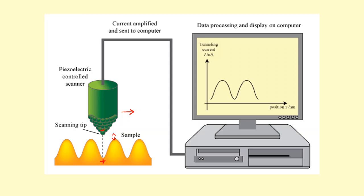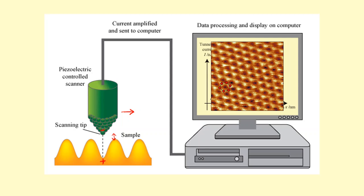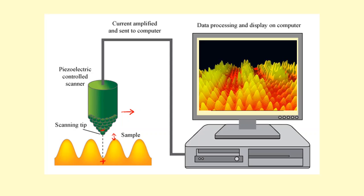The tip doesn't just move left and right, it can also move back and forth. You can get a two-dimensional picture where you can see a higher intensity, a larger current on top of the atoms, and a smaller current in the dips. This can also be used to form a three-dimensional picture.